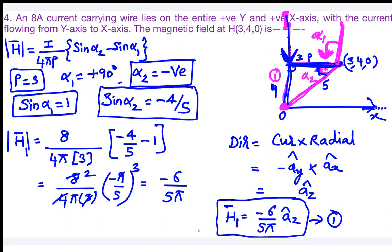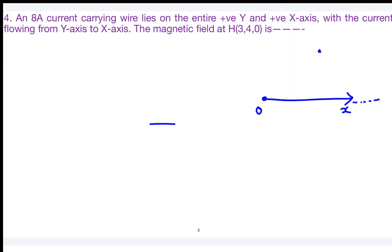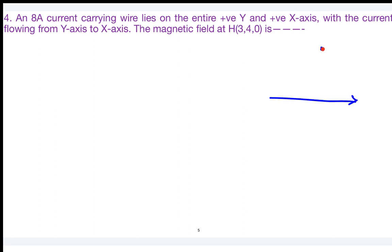Now do the same for the second current element (along the positive x-axis). The observer is at (3, 4, 0). What is the radial distance for this element? The radial distance ρ = 4. Now tell me the values of α₁ and α₂ for this second wire.